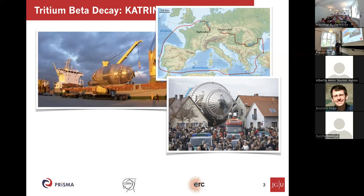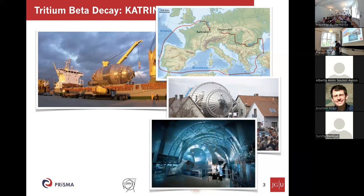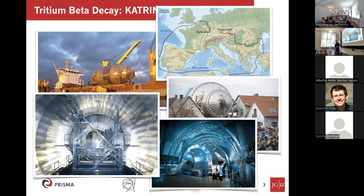Here you can also see why you can't scale this any more, because then the spectrometer would no longer fit between the two houses. This is a very small town on the Rhine River close to Karlsruhe, and this must have been quite an event for the local population. This is what it now looks like in the experimental hall. This is a view of the inside, where you can see the thousands of wires that form the field cage shaping the electric field.